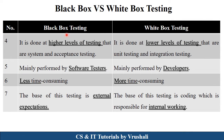Black box testing is done at a higher level of testing because it mainly focuses on input and output of the particular product, and is performed with system and acceptance testing. White box testing is done at a lower level of testing — at unit and integration modes. Black box testing is performed by software testers, while white box testing is mostly performed by developers.